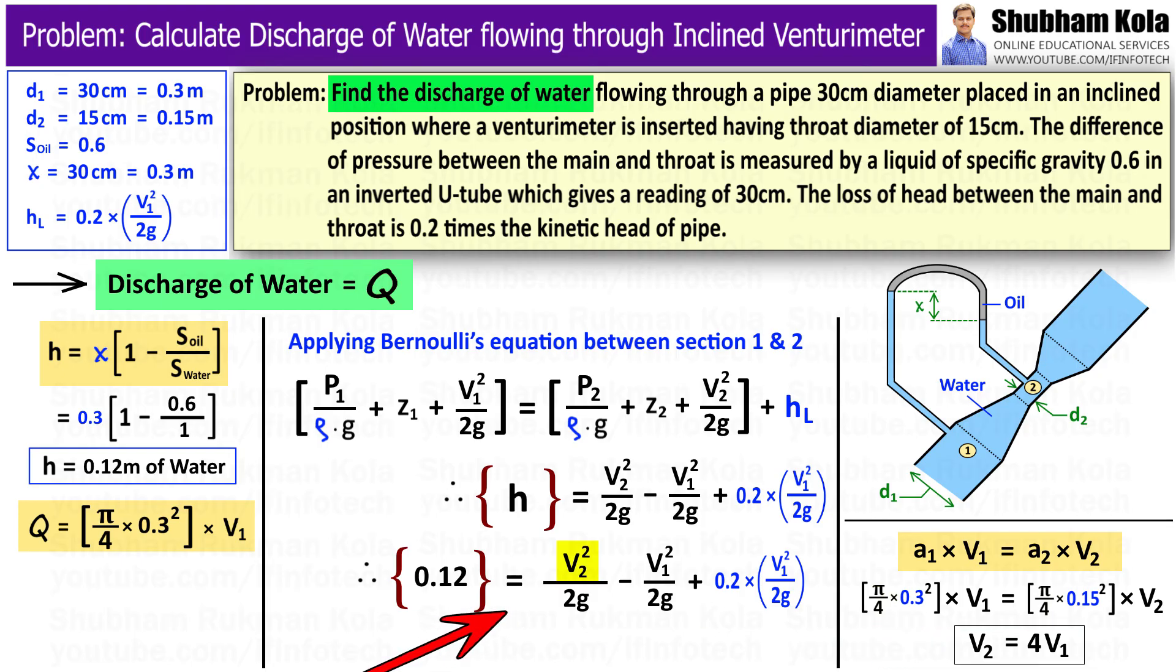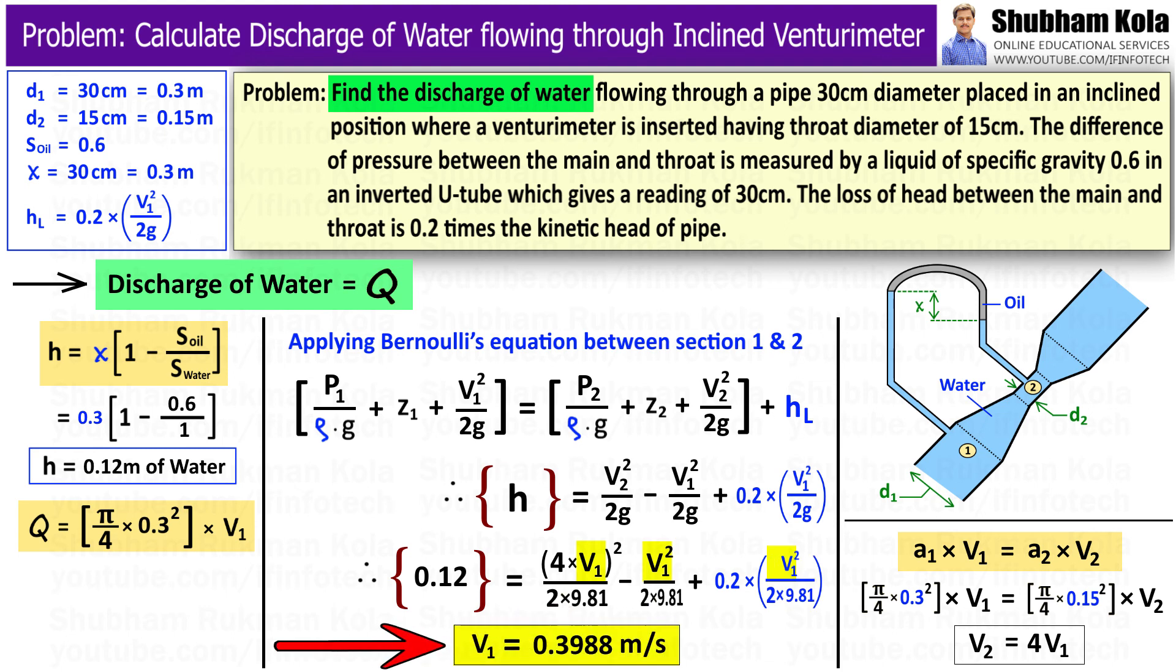In the equation, I will replace v2 as 4 v1. Now the only unknown term is v1. We can calculate v1, where g is acceleration due to gravity, 9.81. Therefore, v1 we got as 0.3988 m per second.